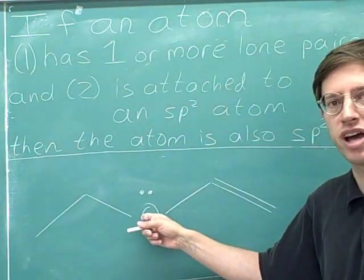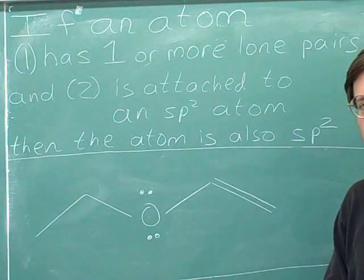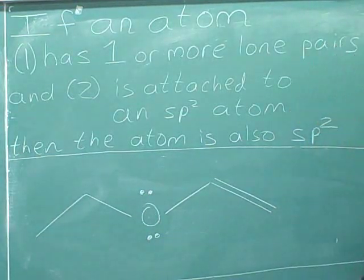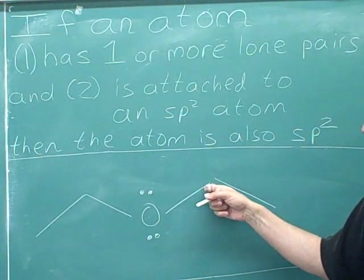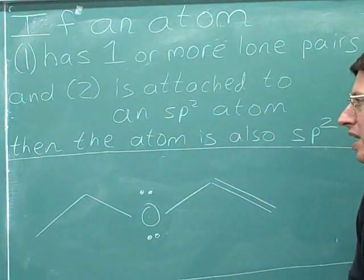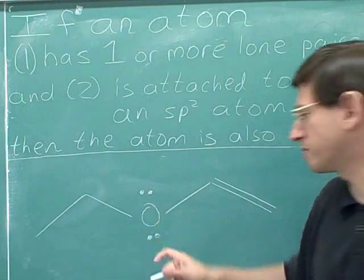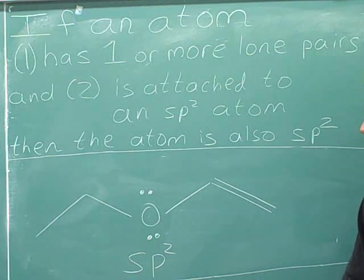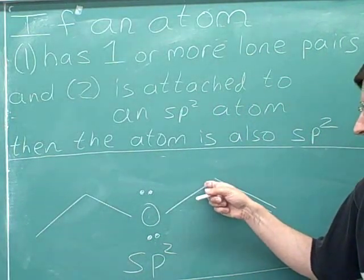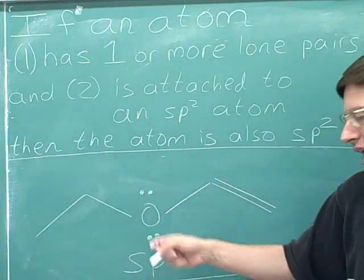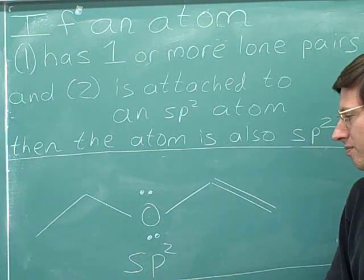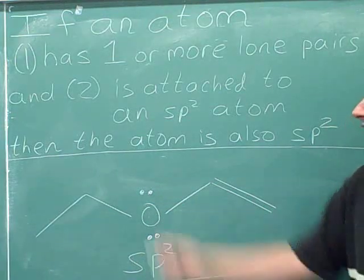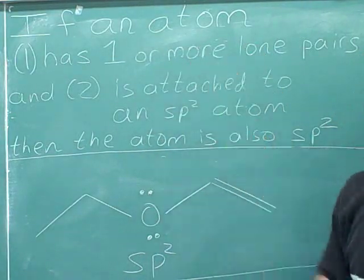What's the hybridization of this oxygen? It does have one or more lone pairs and it's attached to an sp2 atom on the right. So both conditions from our exception apply, and using the exception, this oxygen would be sp2. If this were not an sp2 carbon, we would think this was sp3. Notice it doesn't matter how many lone pairs the atom has — as long as it has one or more lone pairs, it satisfies the first condition.